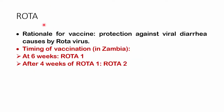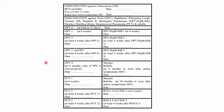For rotavirus vaccine, the rationale is to protect against viral diarrheal diseases, especially rotavirus. The timing is that we give it at six weeks and four weeks after — so there are only two doses.